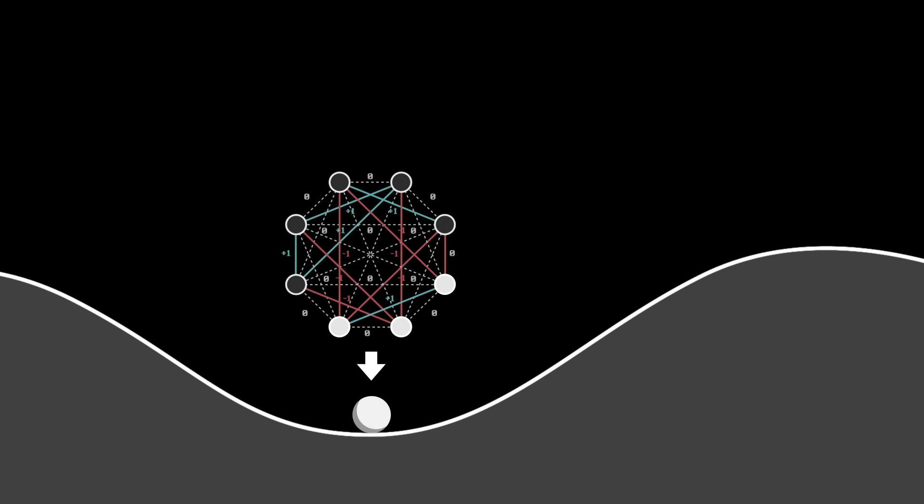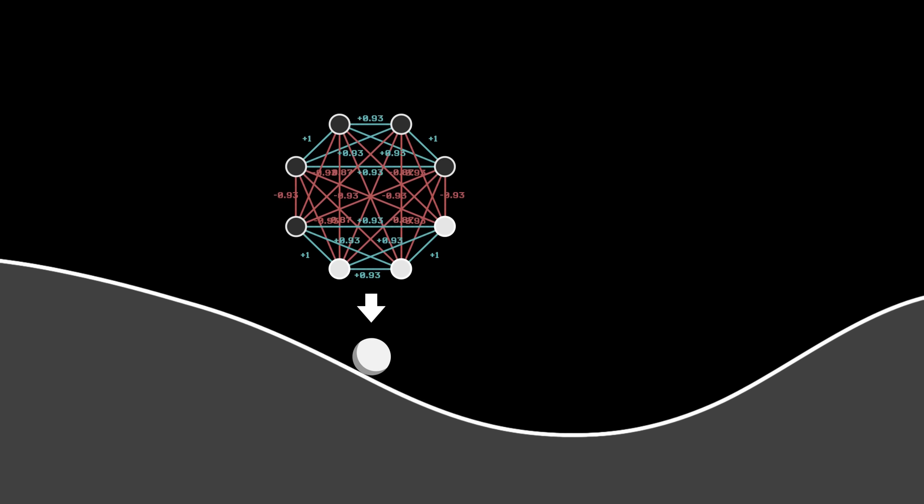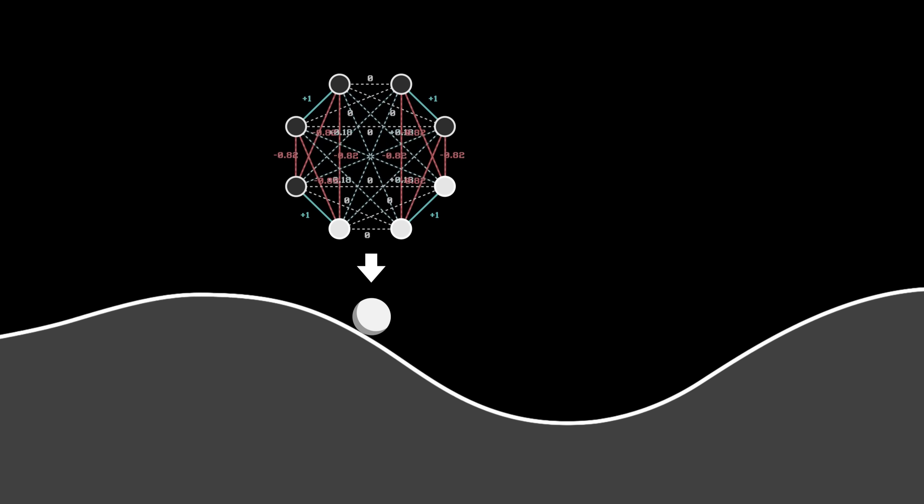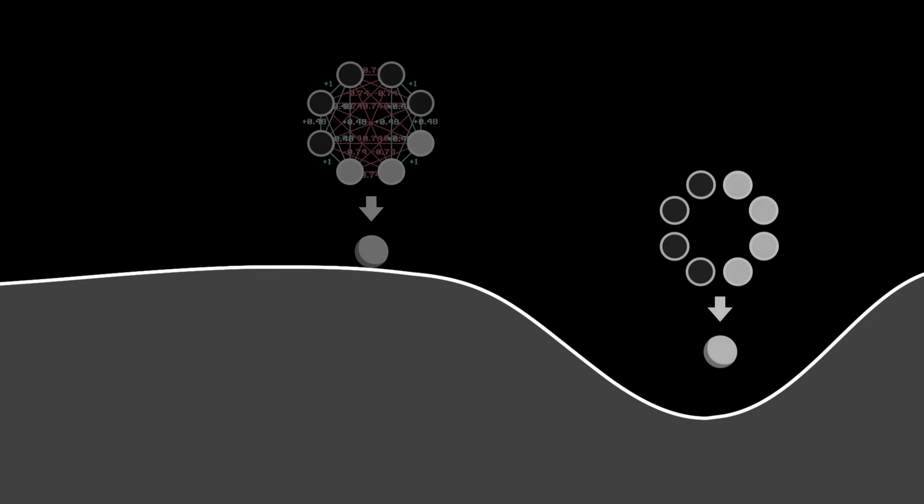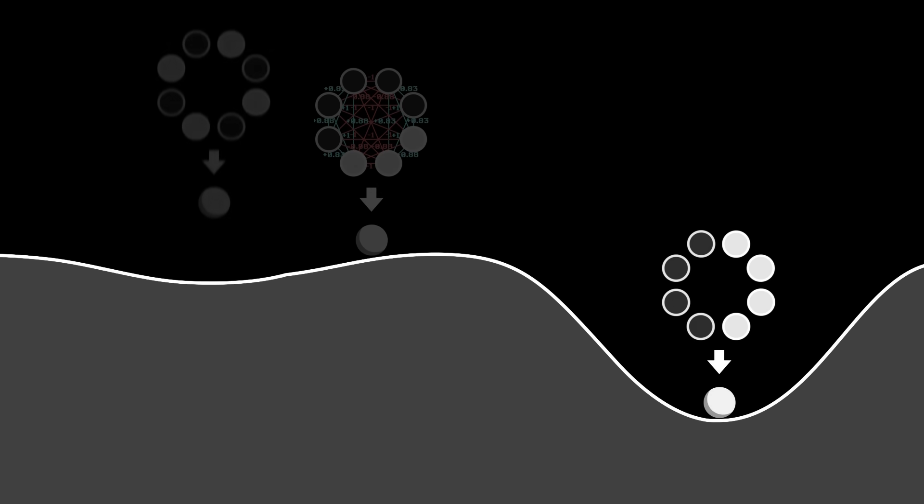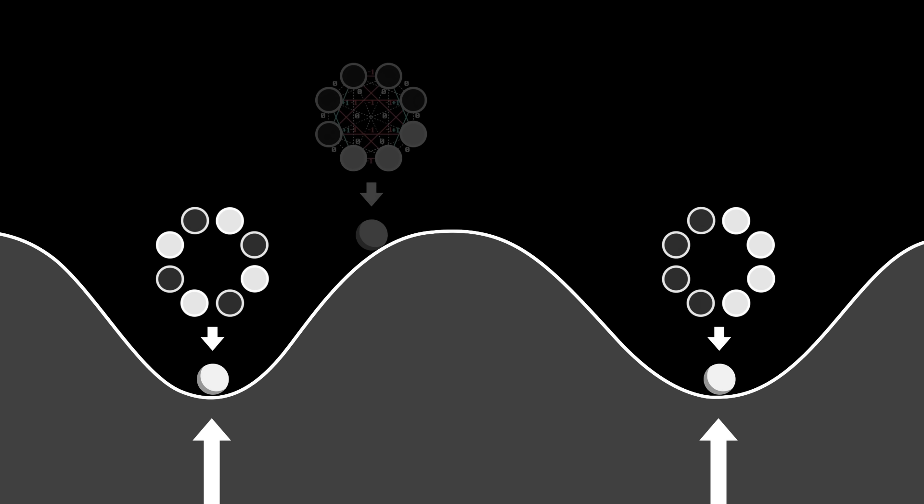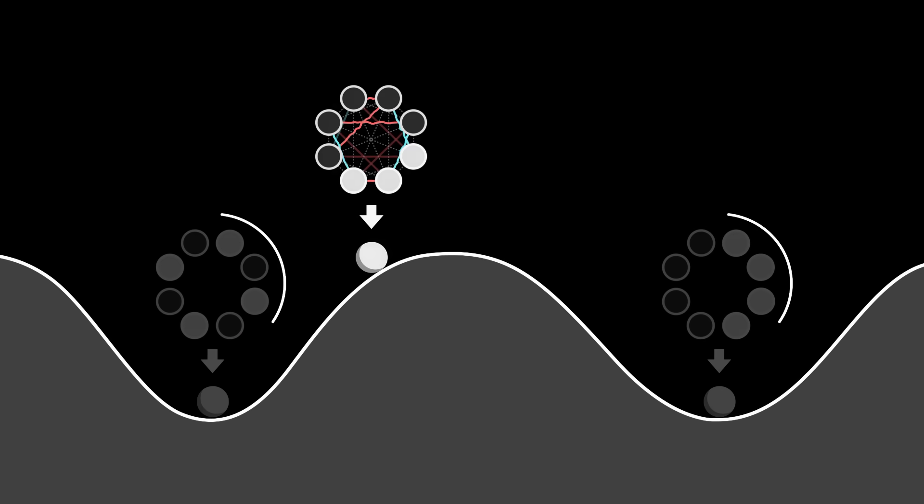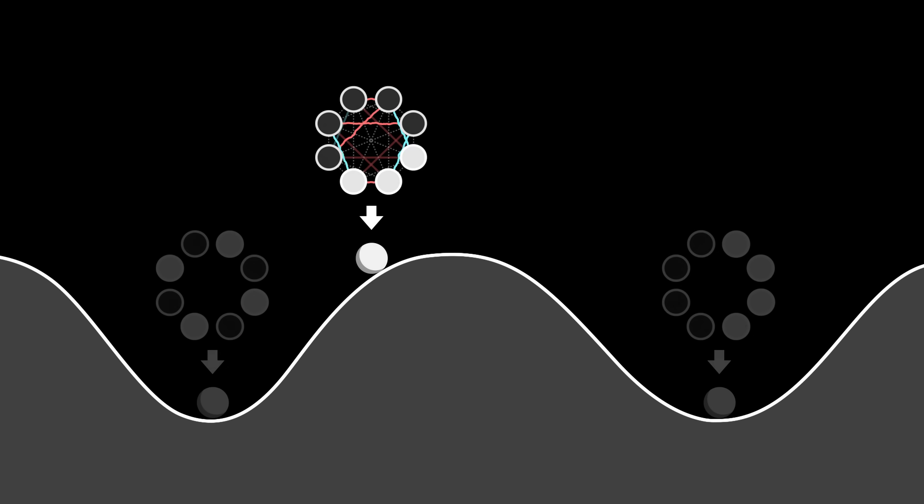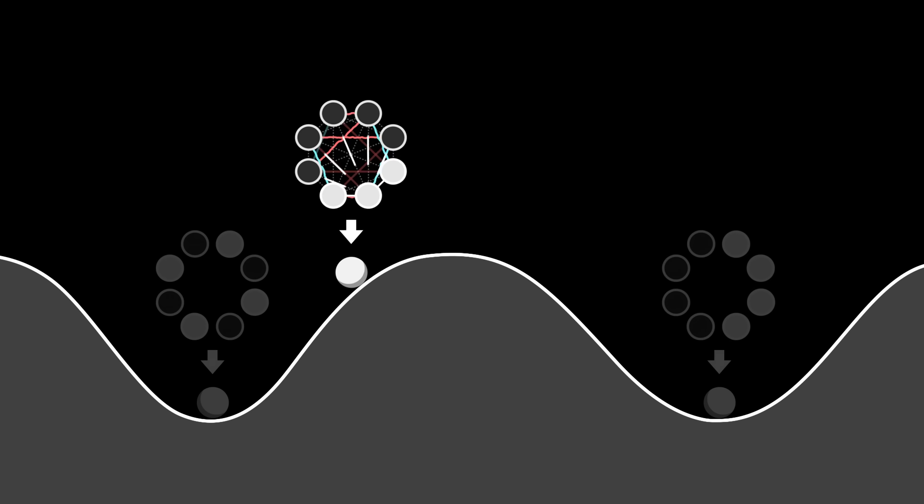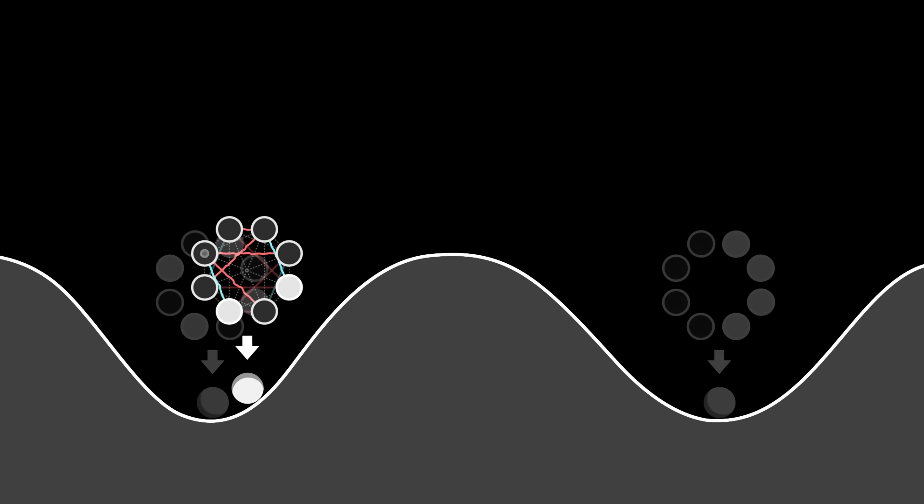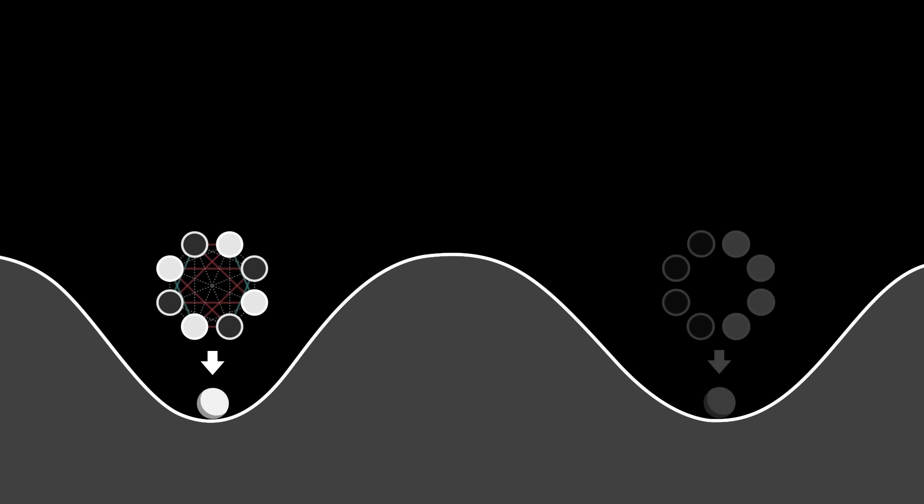In other words, tweaking the coefficients of each synapse allows us to sculpt the landscape of configurations as we wish. In particular, we can dig wells around certain configurations of our choice, indicating that these configurations become equilibrium points, and that the network must evolve towards one of them. Hopfield thus built a network capable of memorising patterns, because when released from an initial state, the network naturally converges towards the closest memorised pattern. A powerful tool that allows machines to learn.